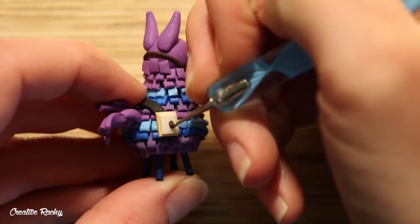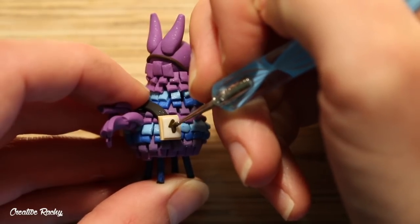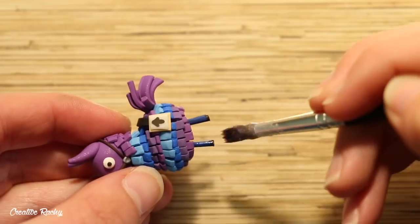On the saddle part, I used some brown clay to add an arrow on each side using my dotting tool rather than a brush so that I could be more precise.